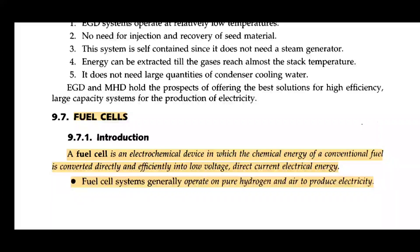That is the dry cell. Now, what is the fuel cell? It is an electrochemical device in which the chemical energy of a conventional fuel is converted directly and efficiently into low voltage, direct current electrical energy. That is the simple definition. Electrochemical device — chemical materials are used to produce electricity. One conventional fuel, chemical energy, produces electricity. It is like a battery.